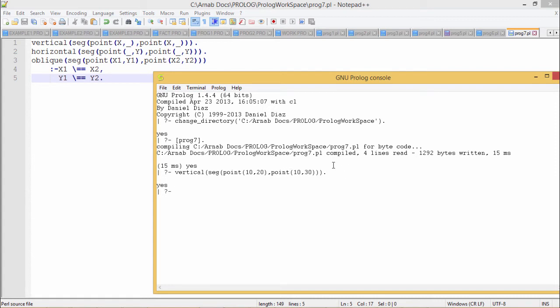If you press enter here, I am getting yes, because the segment is vertical. Two end points of the segment are having the same x coordinates. Now if I make this one 15 for the vertical, I am getting no.